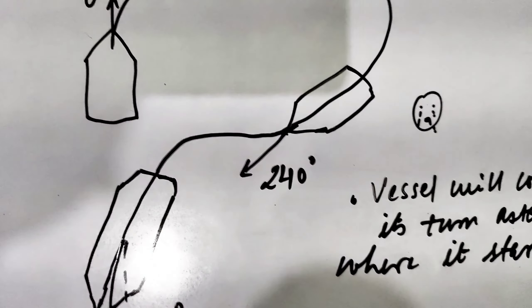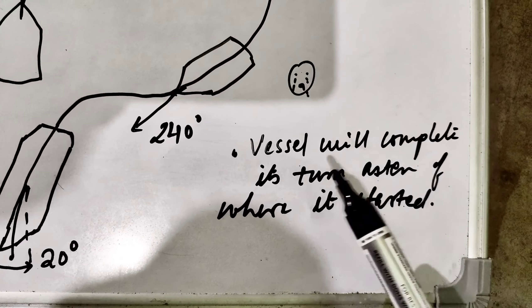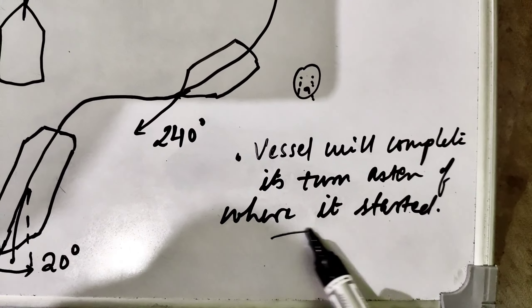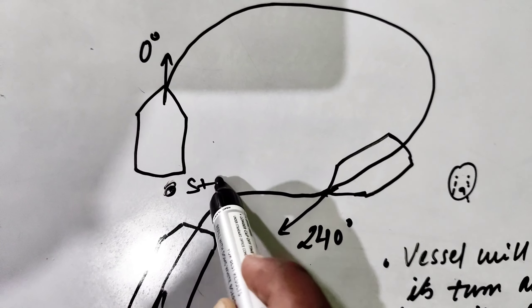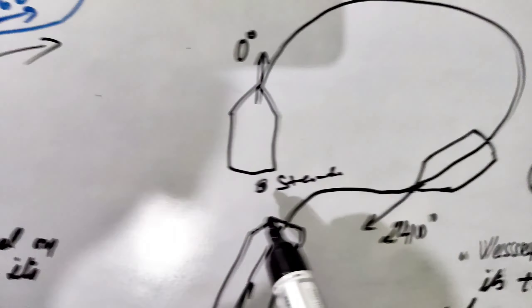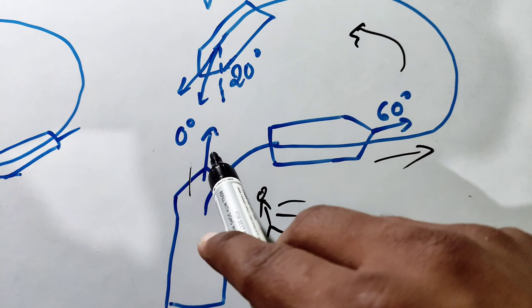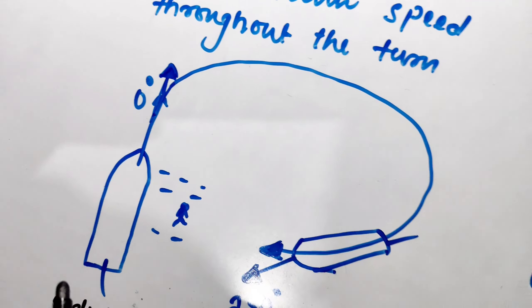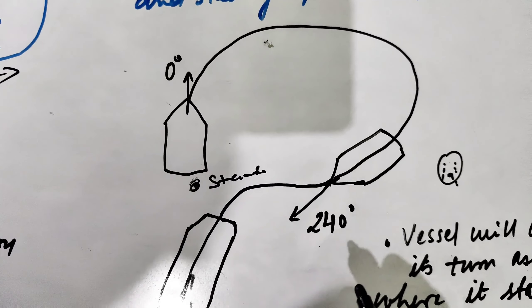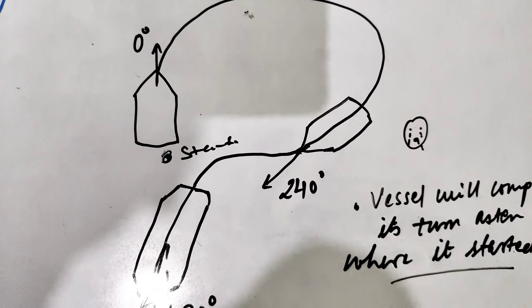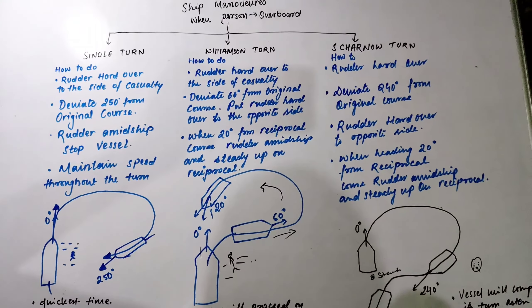The key difference of the Scharnow turn compared to the others is that the vessel completes its turn at the same position where it started. In the Williamson turn and single turn, the vessel does not return to its starting position. This distinguishes the Scharnow turn from the other two maneuvers. Thank you, and I hope you liked the video.